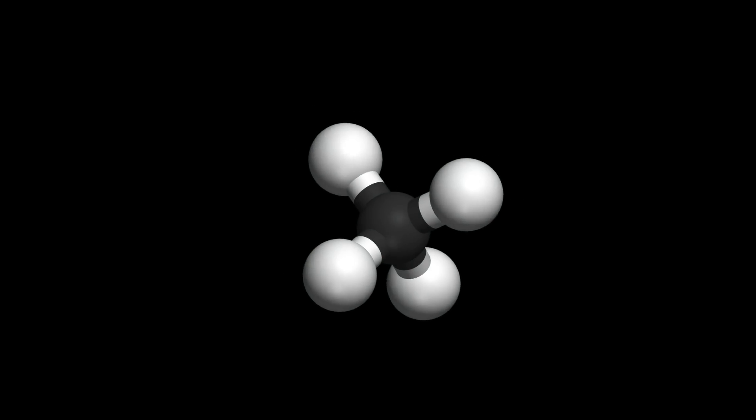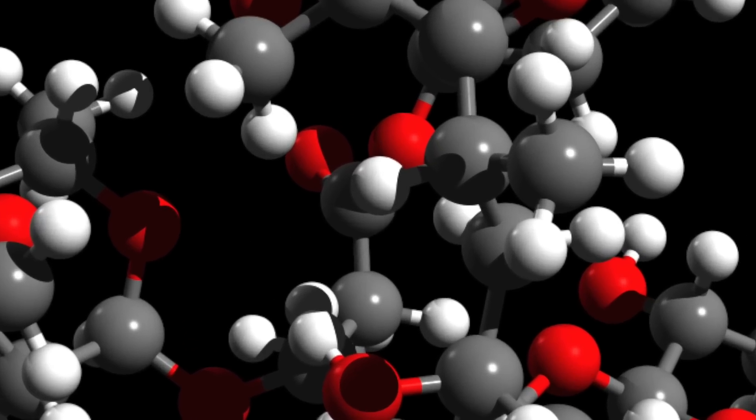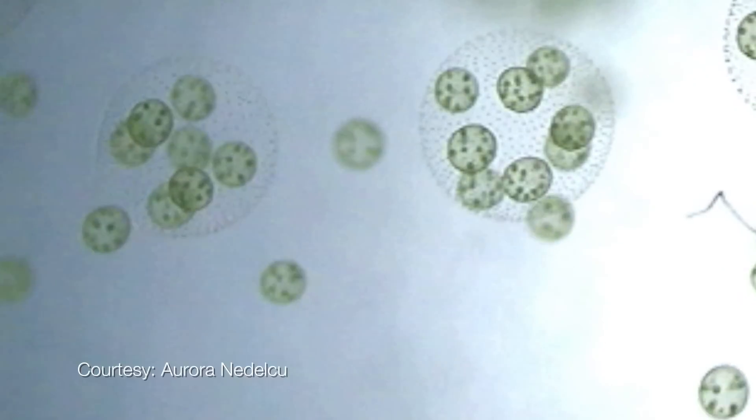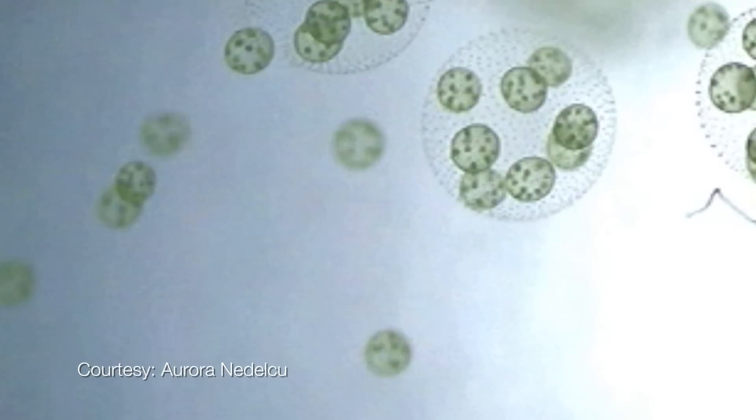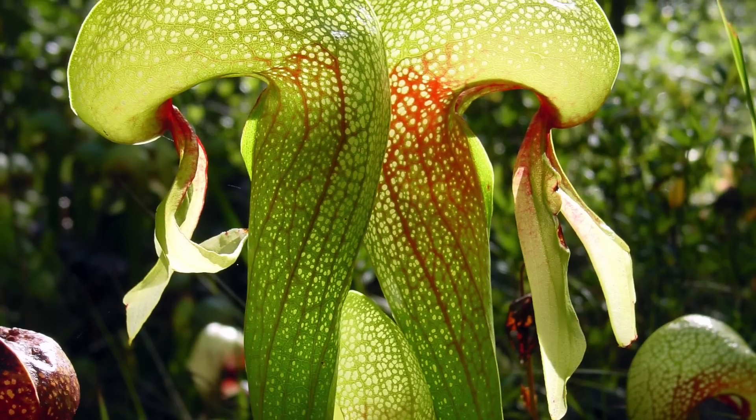At the very beginning of life there were very simple molecules and these emerged into more complex groups of molecules. And then the molecules formed very simple cells. These formed more complex cells. Eventually those cells worked together to form multicellular life and we want to know how this happened.